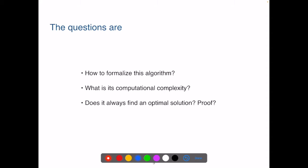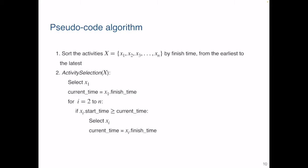Now again, the questions are, how can we formalize this idea and write an algorithm? What is its computational complexity? Can we prove its correctness? First, the implementation of this greedy algorithm. We sort all the activities based on their finish time, from the earliest to the latest. Then we can pick the first activity, X1, and we can find the next compatible activity.